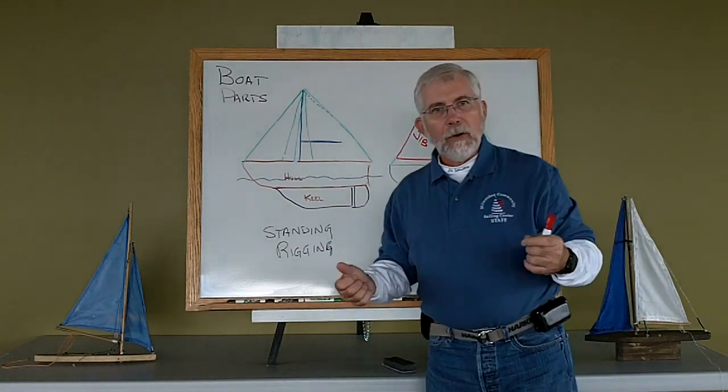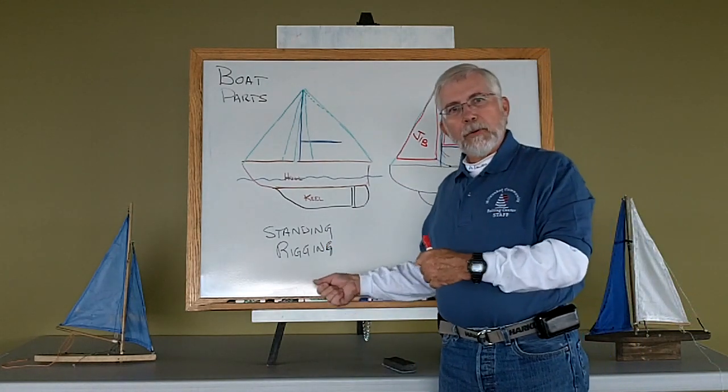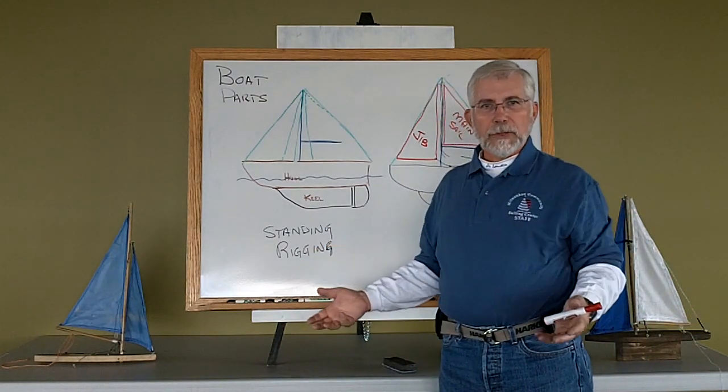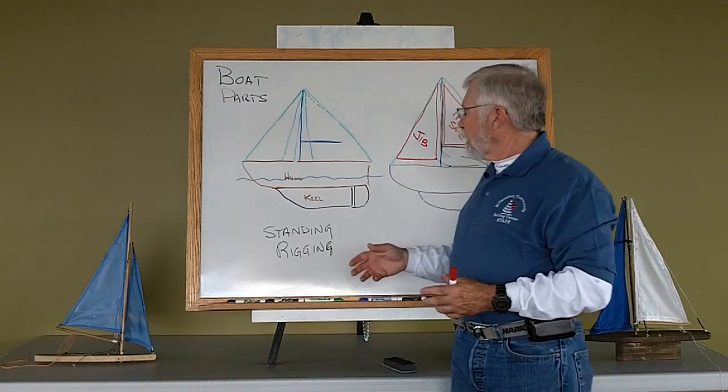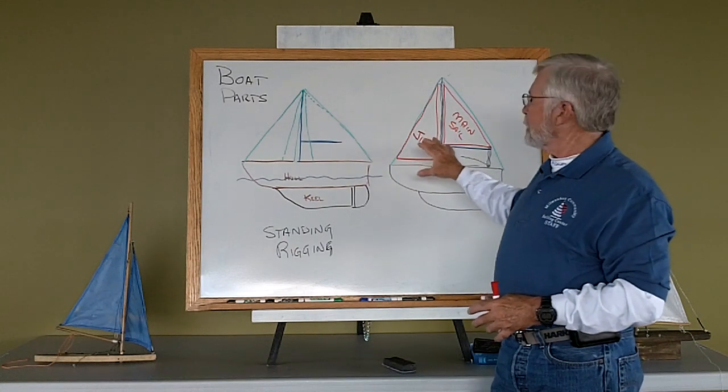Now once I take a string or a rope from land and I take it to a boat and put it on a boat, we no longer refer to it as a rope. We refer to them as lines. So I have a lot of lines on the boat to help me control the sails.